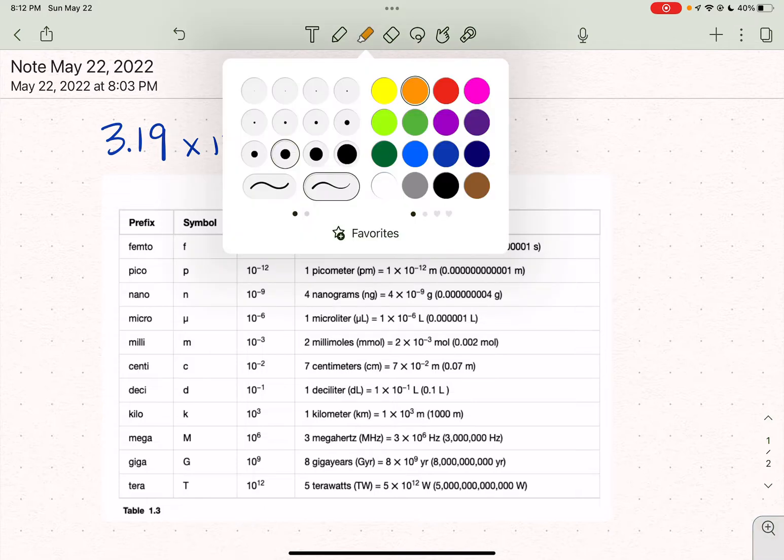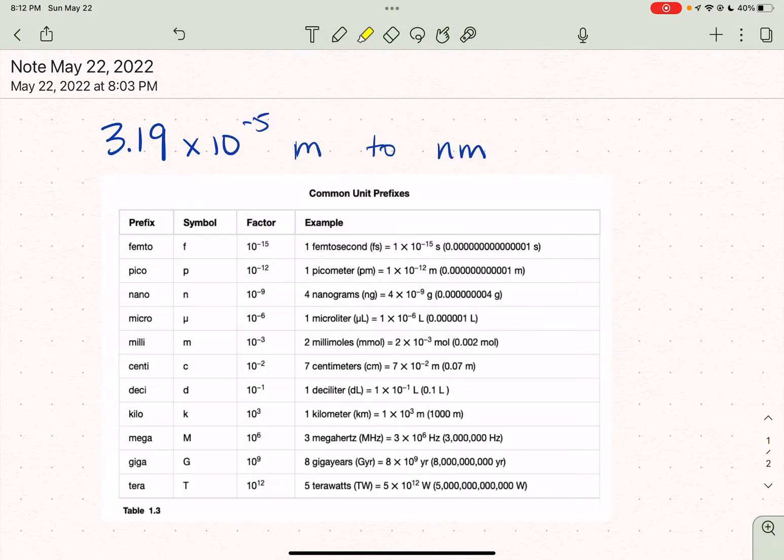So the first thing that you'll notice is in your textbook, or anywhere really, you can look up nano, which means 9, right? Nano. So there's N. And it means 10 to the minus 9.